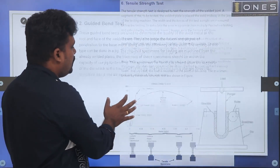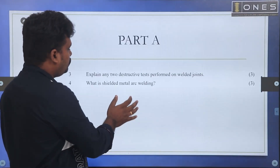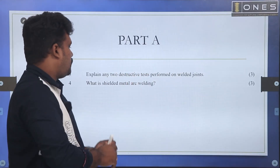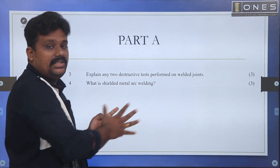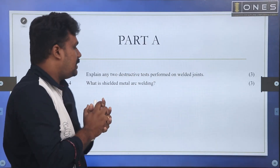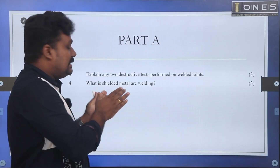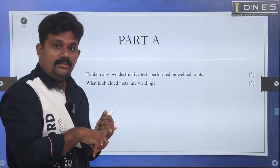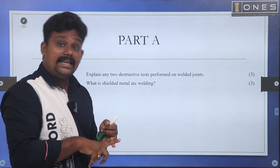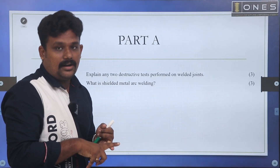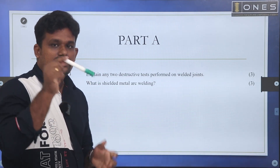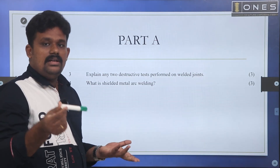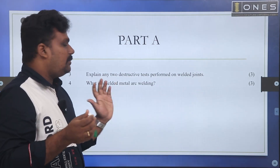First question: what is shielded metal arc welding? Shielded metal arc welding is a manual welding process, also called stick welding.